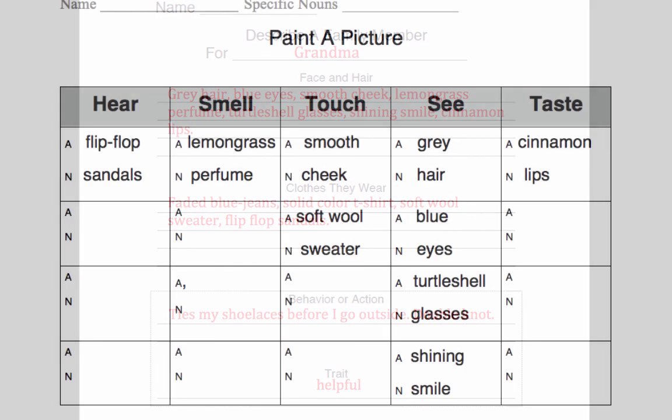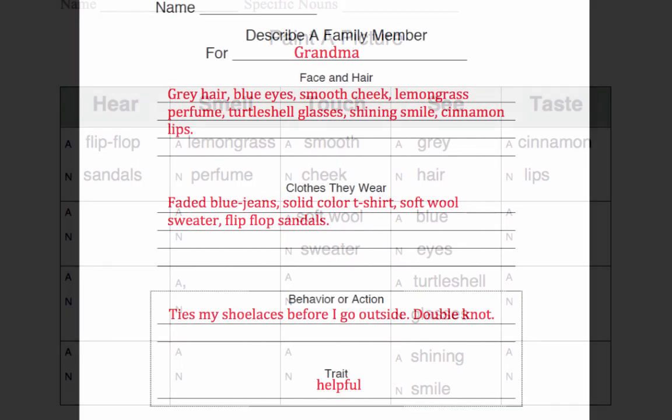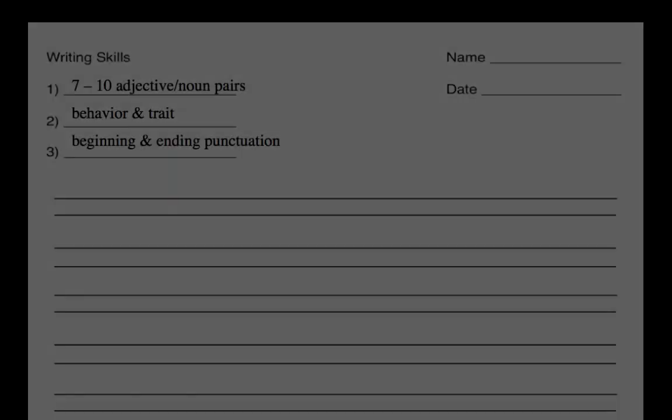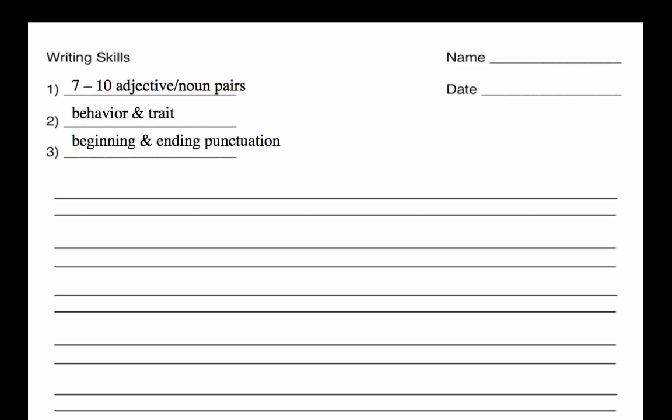You chose a behavior that describes your special person. Take a piece of the class writing paper. Write your name and today's date. In the section for writing skills, put 7 to 10 adjective-noun pairs. On the second line, write behavior and trait. And on the third line, write beginning and ending punctuation. These are the skills we'll use to assess your work.